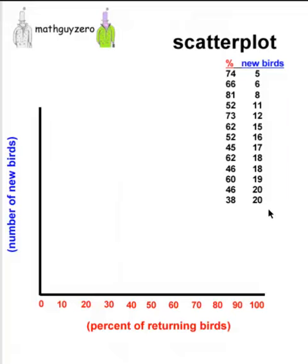And then for the new birds, we'll go from 0 to - normally you try to do a little bit over whatever is the top - so we'll go from 0 to 25.